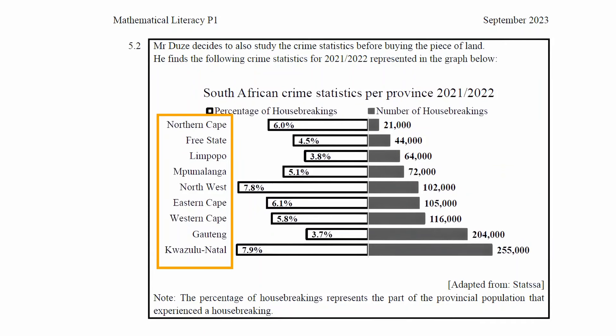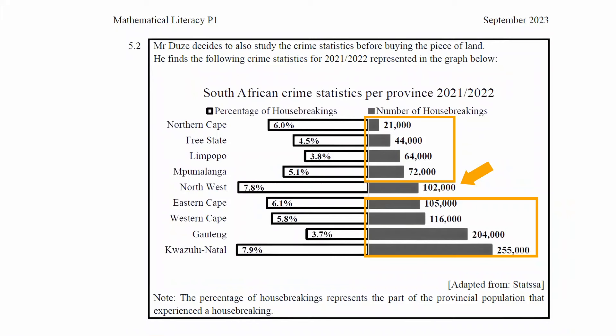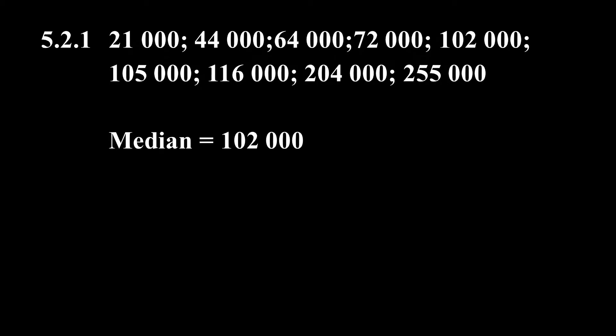The median is a measure of central tendency. It is the value that divides the data set into two equal groups of values. We know that there are nine provinces in South Africa, so the fifth value in the data set will be the median, because the fifth value divides the data set into two groups of four values. The median for the number of house break-ins will then be 102,000.